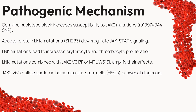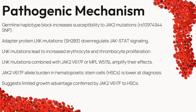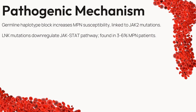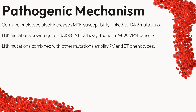The JAK2 mutation's impact on hematopoietic stem cells — the vital precursors to all blood cells — is notable. Interestingly, in the early stages, the JAK2V617F allele burden within these stem cells is found to be lower at diagnosis, hinting at a limited growth advantage conferred by this mutation. The germline haplotype block, a genetic arrangement that heightens susceptibility to MPNs particularly in connection with JAK2 mutations, also introduces LNK mutations which down-regulate the JAK-STAT pathway. When LNK mutations combine with other genetic alterations, the effects are amplified, influencing the phenotypes of PV and essential thrombocythemia.